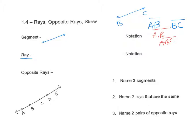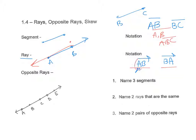A ray has an endpoint — or a starting point — and it extends infinitely, which is why there's an arrow in one direction. If this is AB, I write it as AB with a ray above it. A is where it starts. The ray notation always goes to the right. BA is a totally different ray: BA starts at B and goes towards A, while AB starts at A and goes towards B.